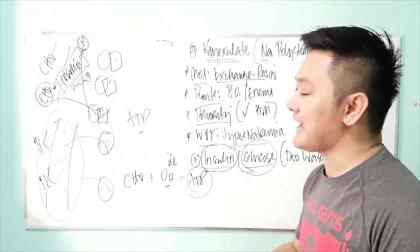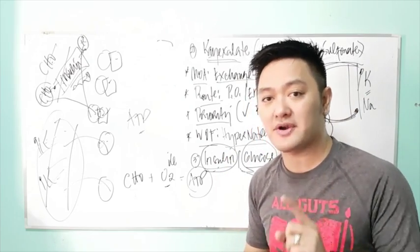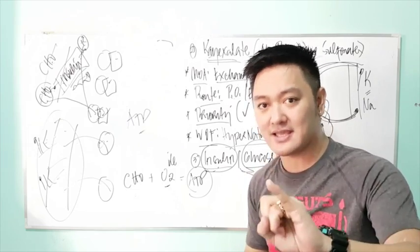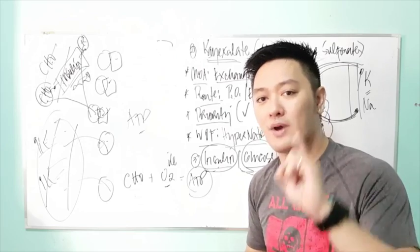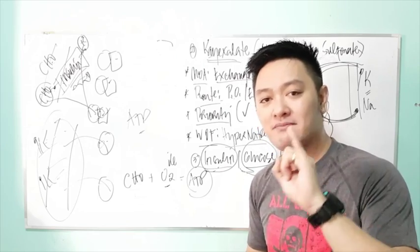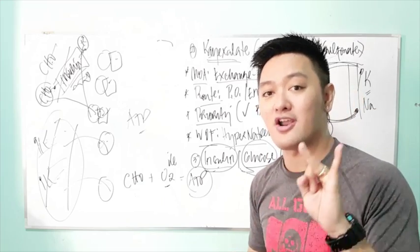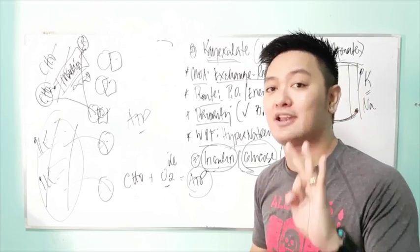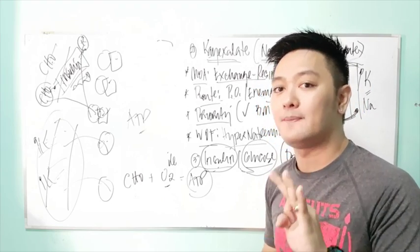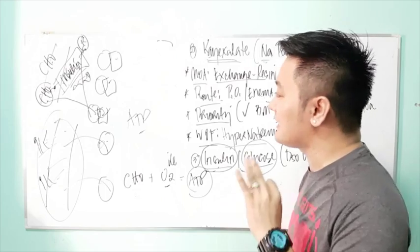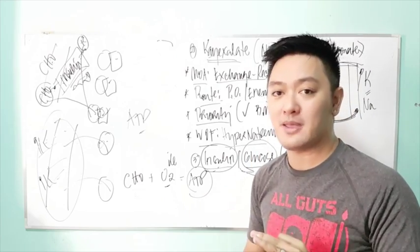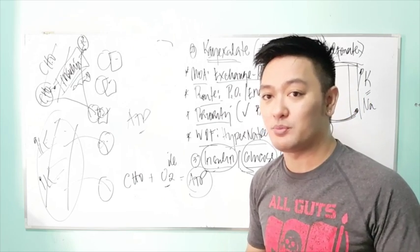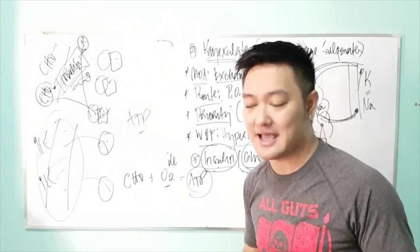In summary, for hyperkalemia: give potassium-wasting diuretics, Kayexalate (sodium polystyrene sulfonate), and insulin plus D50 water. In severe cases, dialysis will be initiated. These are common pharmacologic agents given to patients with hyperkalemia.